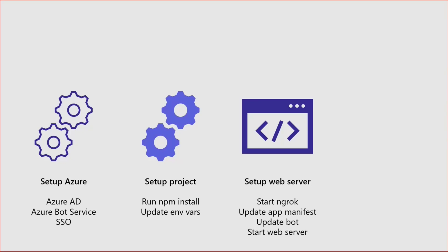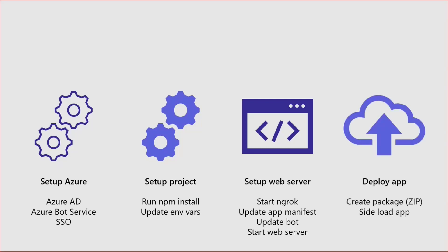Then when you've got all that set up, you need to start your web server, but first you need to start ngrok. You need the tunnel so that the bot service can talk to your code on your local machine and send messages backwards and forwards. That gives you a dynamic URL. You need to update your app manifest, then update the bot and tell it which messaging URL to use in the new domain, then start your web server. Then finally, once you've done all that, you need to package up your app, create your app manifest, and then sideload that into Teams. It's a lot of effort before you've even started really thinking about code and developing.